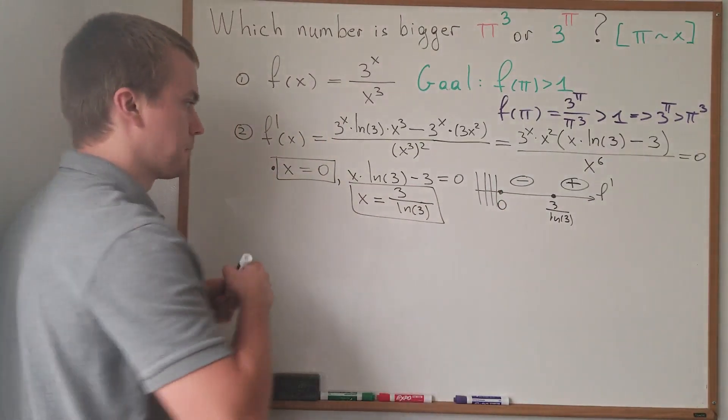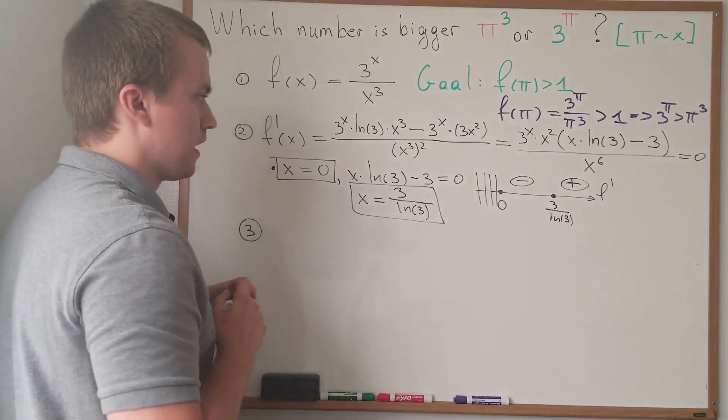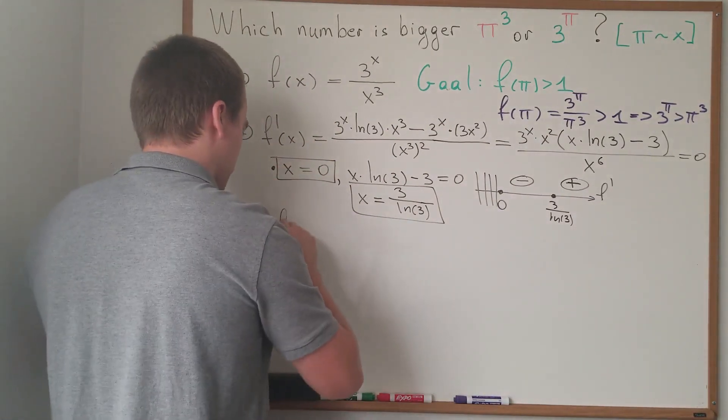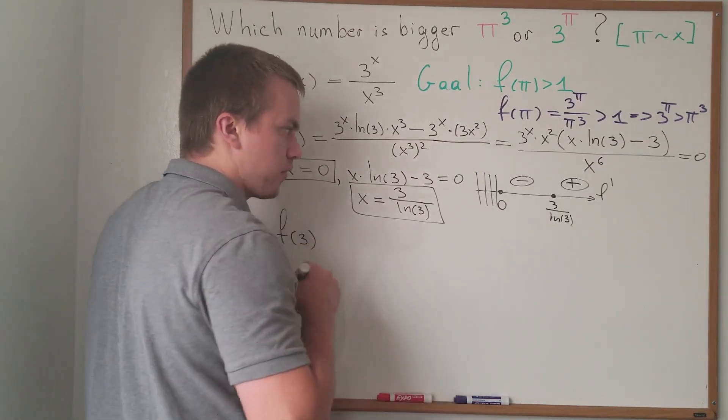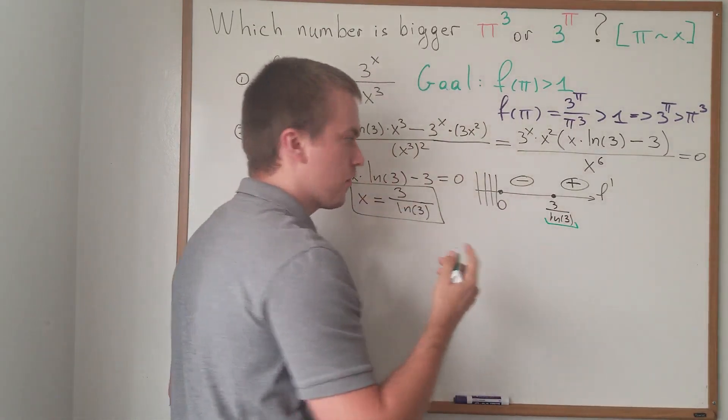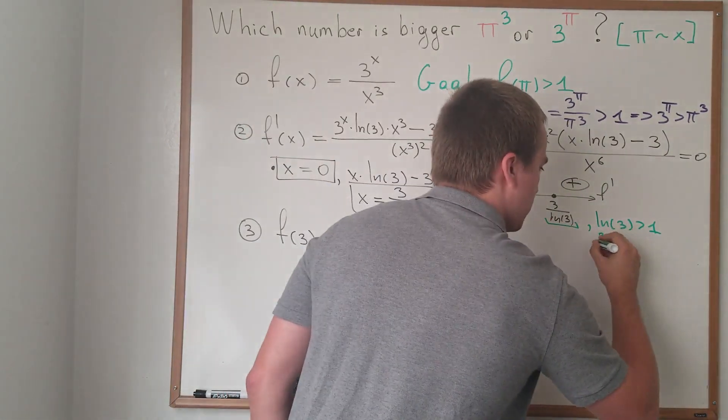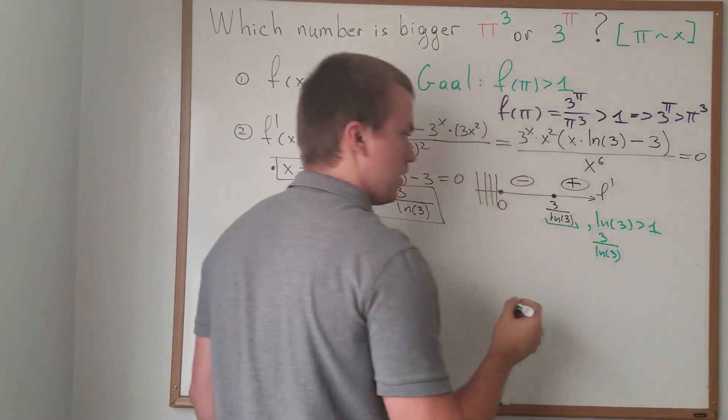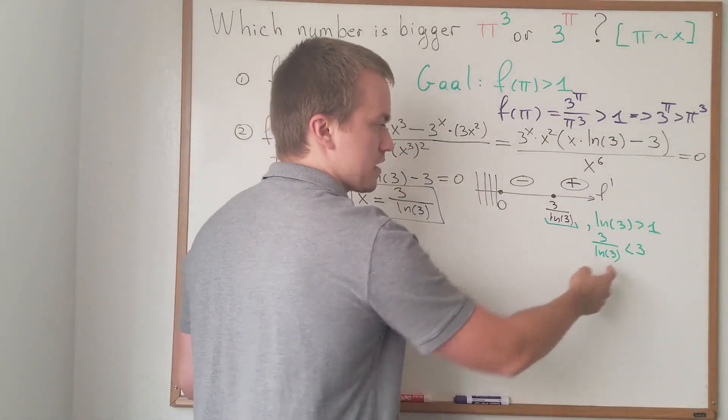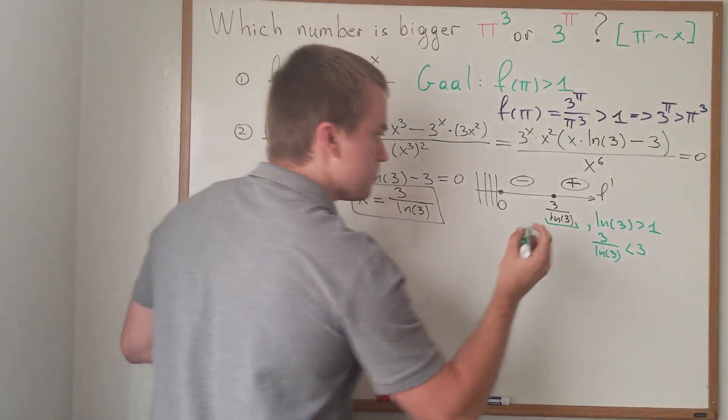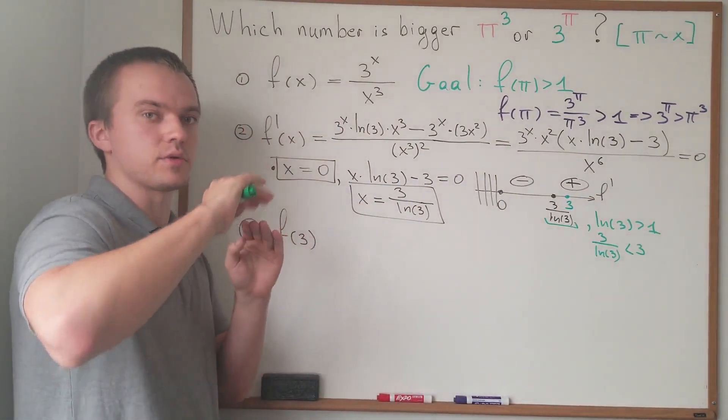So, what is our next step? For step number 3, our goal is to show that f(π) is bigger than 1. But let's first find what is our f(3). And why I'm looking for f(3)? Here's just one small thing. We know if we have ln(3), that ln(3) is bigger than 1. Yes? So, it means 3 over ln(3) is going to be less than 3. Why? Because if you divide by the number which is bigger than 1, your quotient is going to be less. And so, it means that my point 3 lies to the right of this point. So, my point 3 lies on the interval where my function increases.